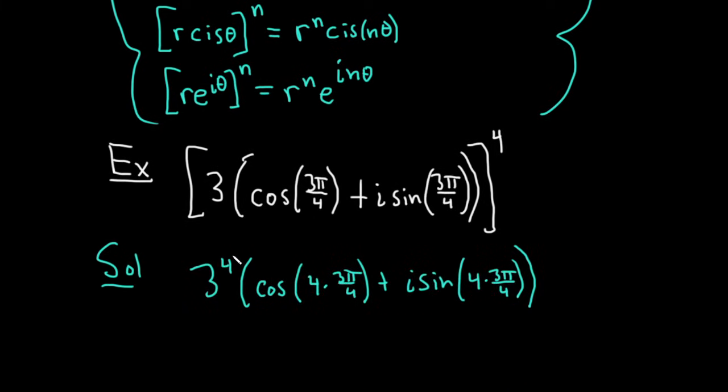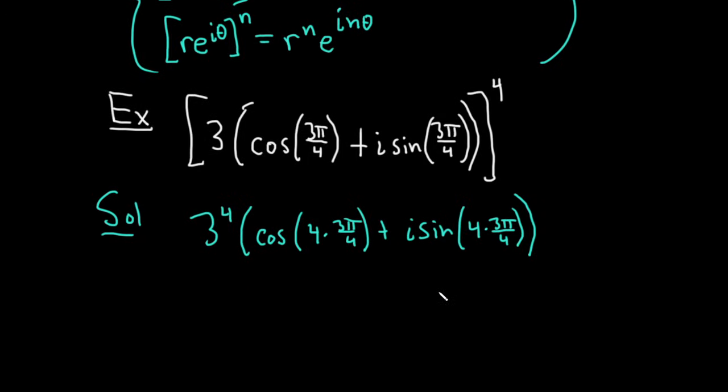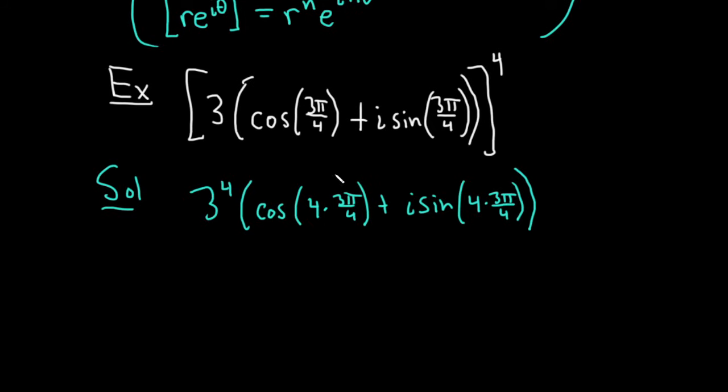So it's three to the n, n is four here. Cosine n theta, so n is four, theta is three pi over four. i sine n theta, n is four, theta is three pi over four. So very simple. So now we can clean this up. We can cancel these fours. Three to the fourth is 81, that's because it's three squared times three squared, which is nine times nine, which is 81. So it's 81.